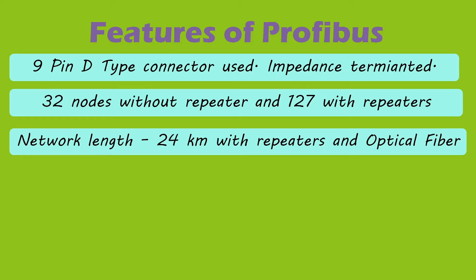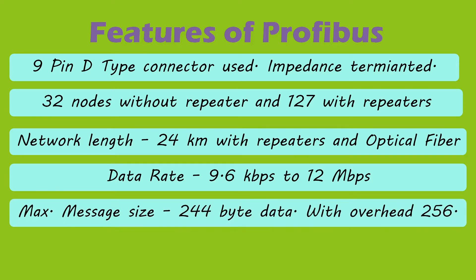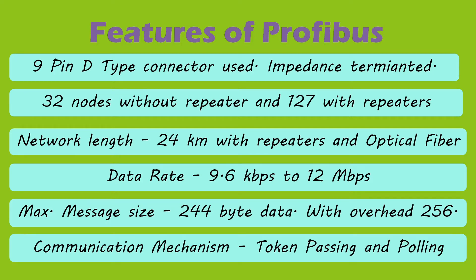The total network length supported is 24 km with repeaters and optical fiber transmission. Data speed varies from 9.6 kbps to 12 Mbps on a Profibus network. Message size can be 244 bytes of data per message per node with an additional overhead of 12 bytes, resulting in a maximum message length of 256 bytes. Messaging is done by two mechanisms: polling and token passing.